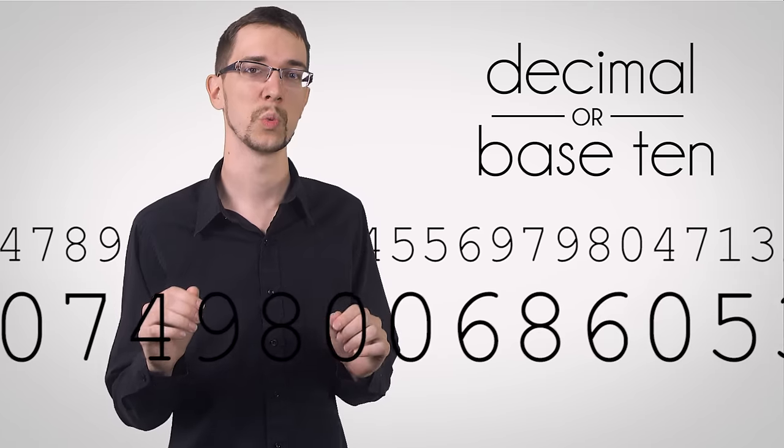But first, we need to understand exactly how our numerical base system, known as decimal or base 10, works the way it does. There are 10 symbols that we use for all of our numbers. Starting from 0, we can count all the way up to 9 before we run out of symbols to use.